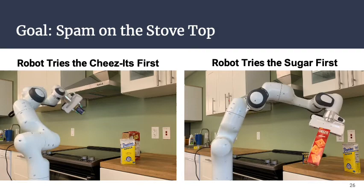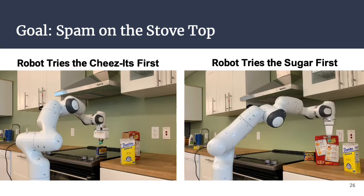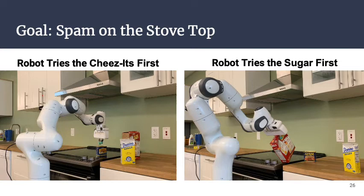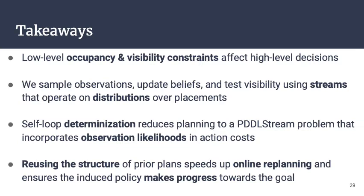In both examples, the goal is to place the spam on the stovetop, with the spam starting with a uniform prior over the tabletop. In the left example, the robot picks up the Cheez-It box, finds the spam behind it, and terminates quickly. In the right example, the robot first picks up the sugar box, fails to detect the spam, then manipulates the cracker box — picking it up twice: first to get a general location and second to get a fine enough pose estimate to successfully pick it — then places it on the stovetop to complete the task.